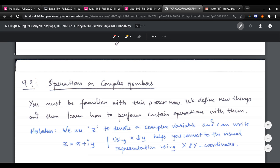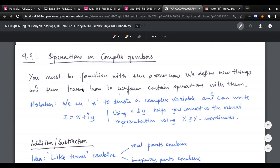Now, a certain notation introduction here: we use z to denote a complex variable. And in general, we write z equals x plus iy when x and y are used so that you can connect it with a visual representation using x and y coordinates.